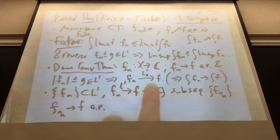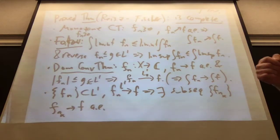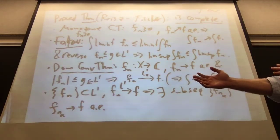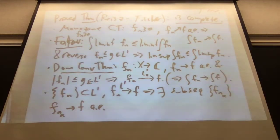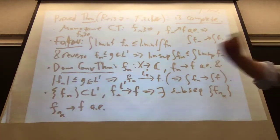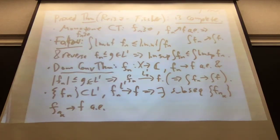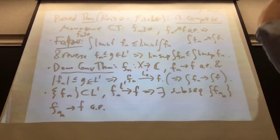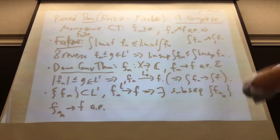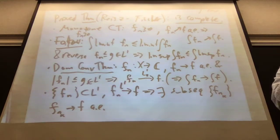Those are the two standard things to keep in mind for why dominated convergence fails: the indicator function of [n, n+1], which stays bounded but runs off to infinity, so the pointwise limit is zero yet the integral doesn't converge. The other example is height n on [0, 1/n], which again converges to 0 almost everywhere but the integrals are 1 all the time. Mass can escape in one of those two directions.